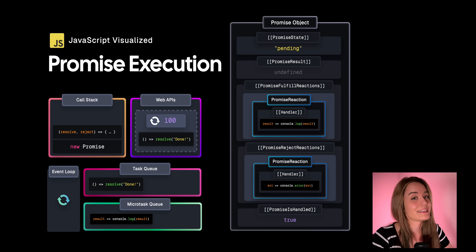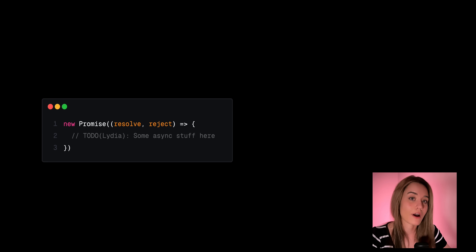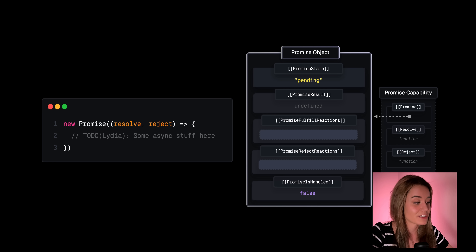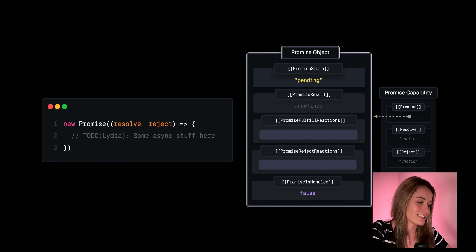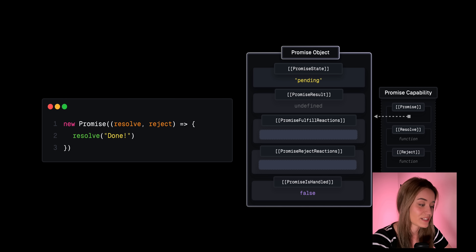One way to create a promise is by using the new promise constructor, and this constructor also receives an executor function. When the new promise constructor is executed, a new promise object is created in memory and this object contains some internal slots like the promise state, promise result, promise fulfill reactions, promise reject reactions, and promise is handled. We can resolve this promise by calling resolve, which is made available to us by the executor function. When we call resolve, the promise state is set to fulfilled and the promise result is set to the value that we pass to resolve — so the string 'done' in this case.